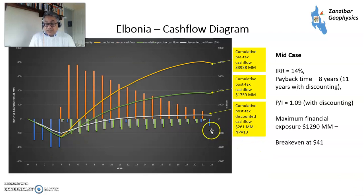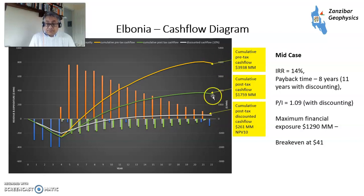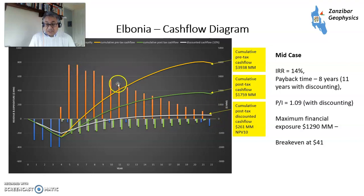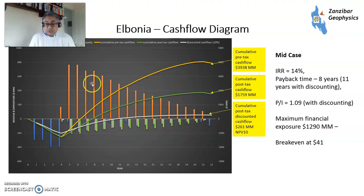This is your cash flow diagram showing cumulative pre-tax cash flow — that's pretty healthy. Then this is after the government takes its share: it's a royalty oil system so they take a tax and royalty share. And then this is after the cash flow discount, because revenue later in the curve is discounted at 10% per year — money coming in late is worth a lot less than money coming in early.